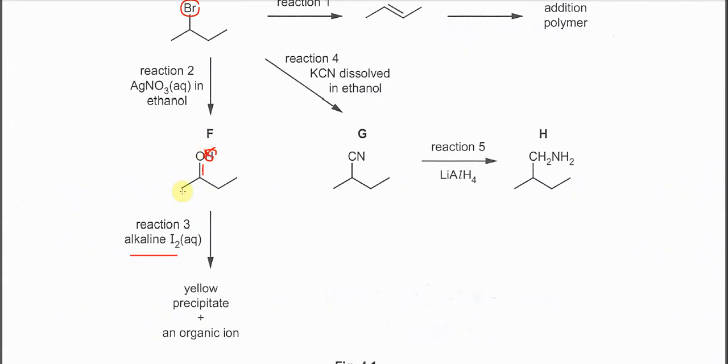So the methyl ketone forms then it will further react with iodine to form the iodoform CHI3 and organic ion.